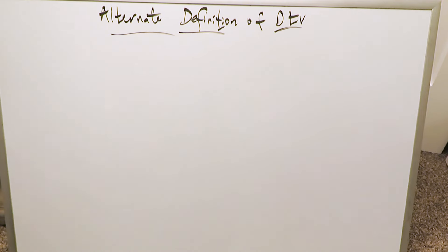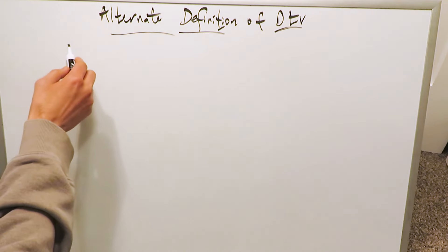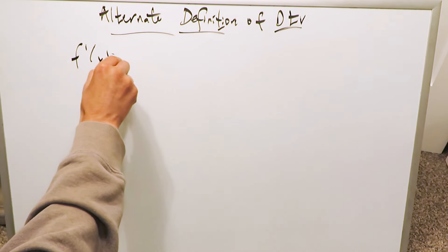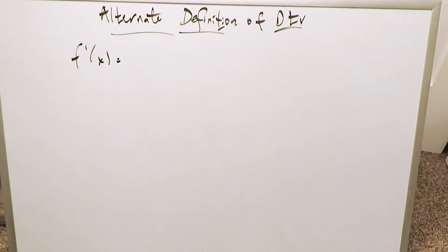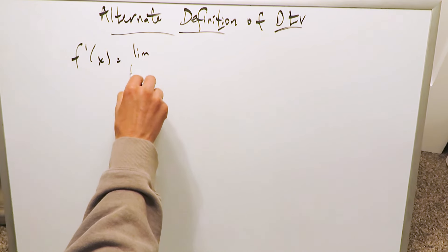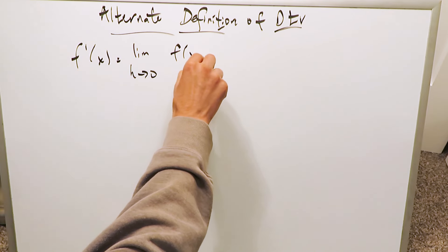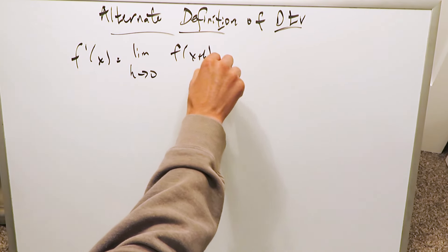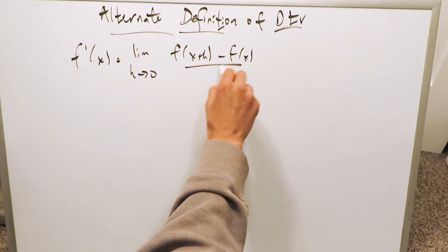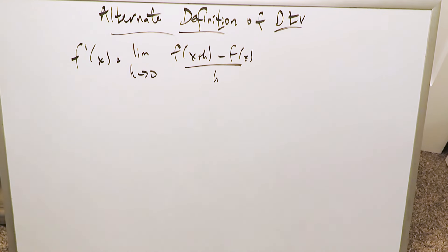You know what the basic definition of a derivative is — you've seen it so many times. The derivative of a function can be represented by means of the basic definition: the limit as h approaches 0 of f of x plus h minus f of x, divided by h.